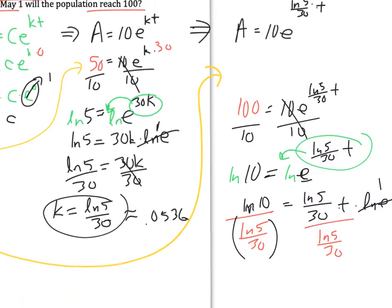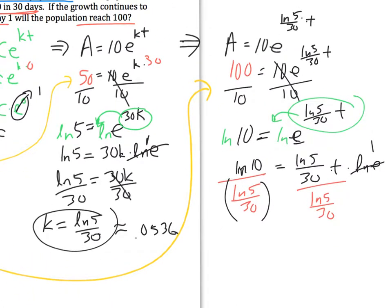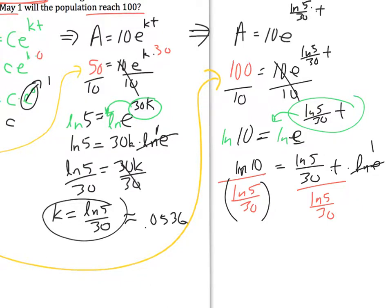I'm solving for time, so divide by ln(5)/30, or some of you are probably saying that looks gross, that's a complex fraction. I agree, gross. How could we make it better? We could multiply by the reciprocal. So if you want to look at this as a fraction here, multiply by 30 over ln(5). So it might be simpler to write it this way: 30 times ln(10) over ln(5) is going to be my time. Type that in your calculator.